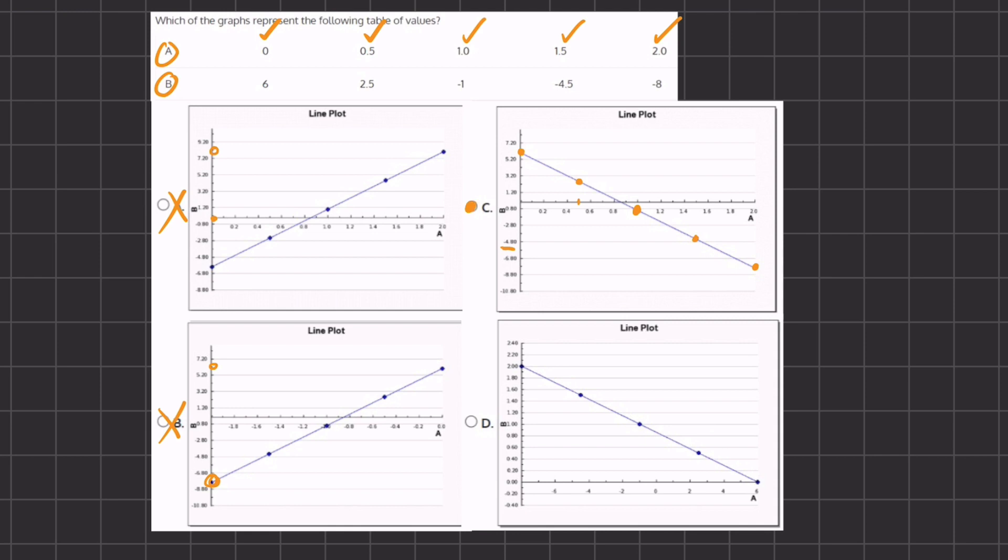Therefore C represents all of the table of values on our graph. And let's quickly see why D is incorrect. If we go to 0, up 6, we expect to find a point above this 2.4 value, and therefore it is not plotted, and it does not exist on the graph. Therefore D is also incorrect, and C will remain our final answer.